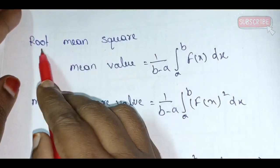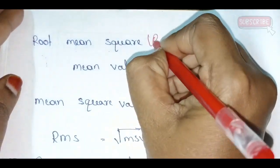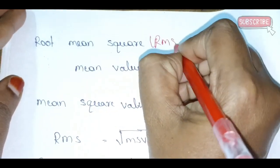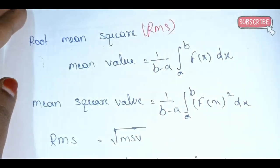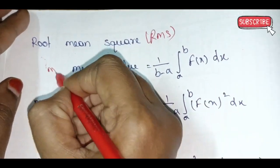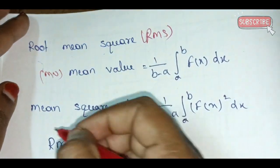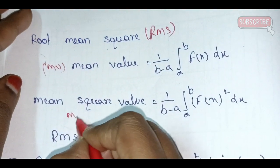Root Mean Square is RMS — that's the shortcut. We have RMS, and also MV and MSV.